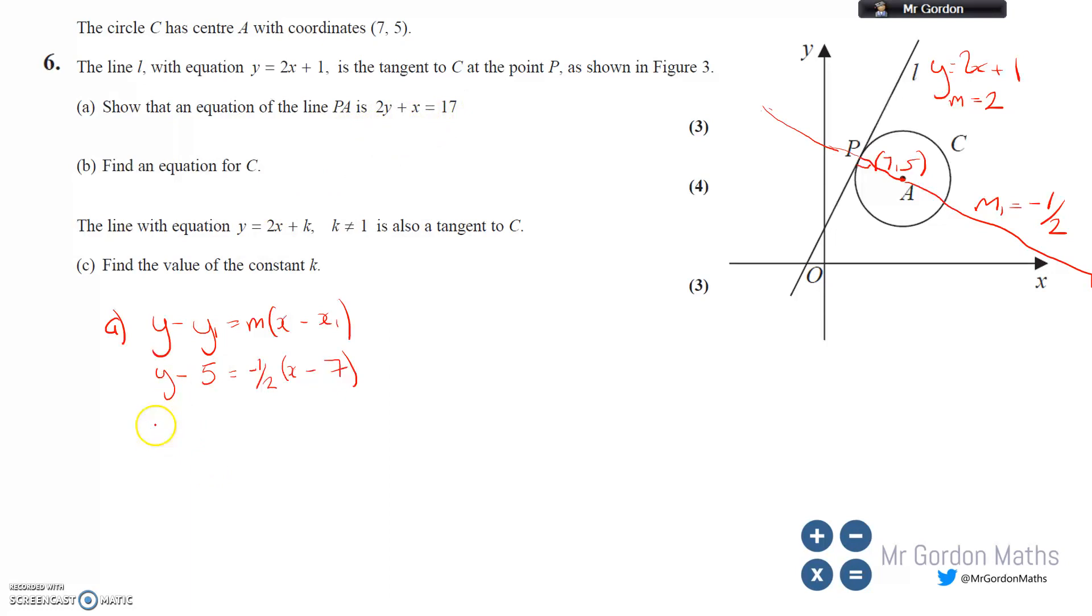So y-5 equals minus a half x plus 7/2. I'm going to multiply everything by 2 to get rid of the fractions. I did this because I could see 2y in the target form, so let's multiply by 2 and eliminate those fractions.